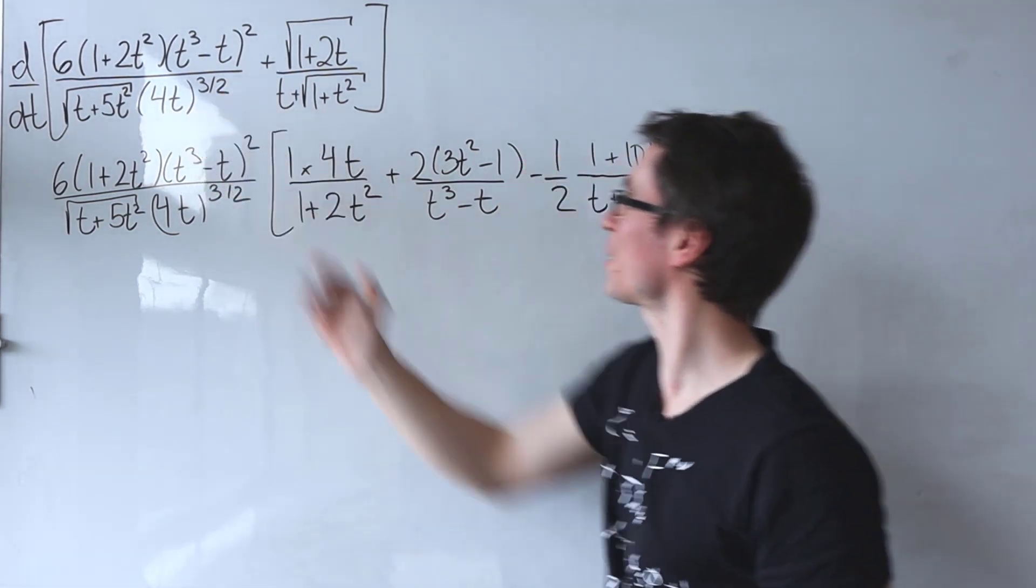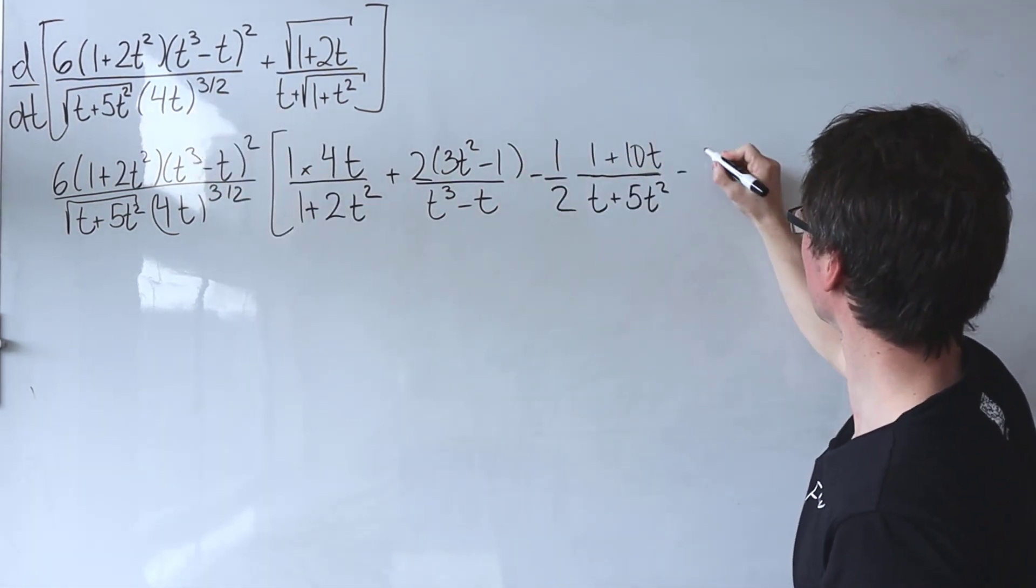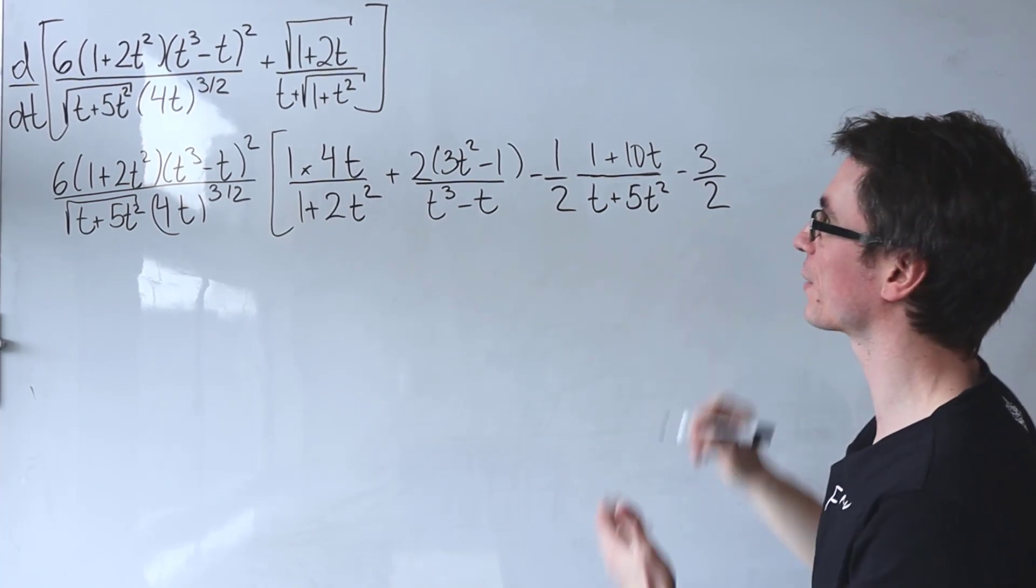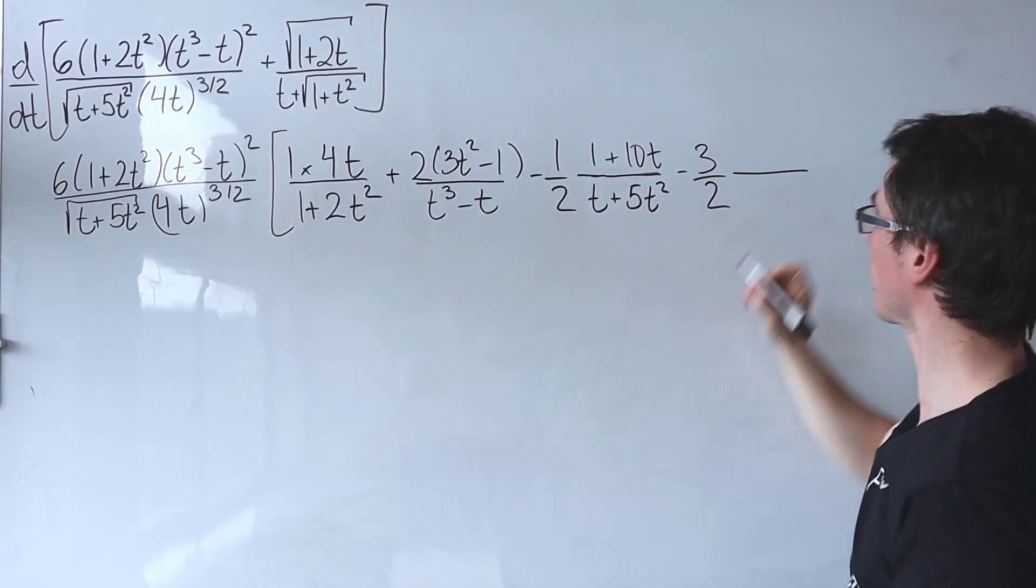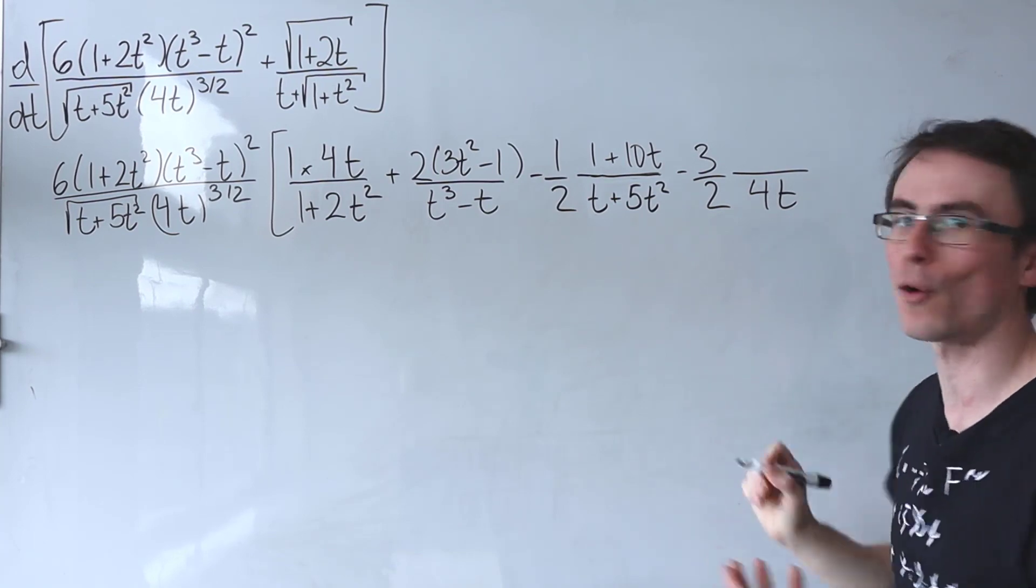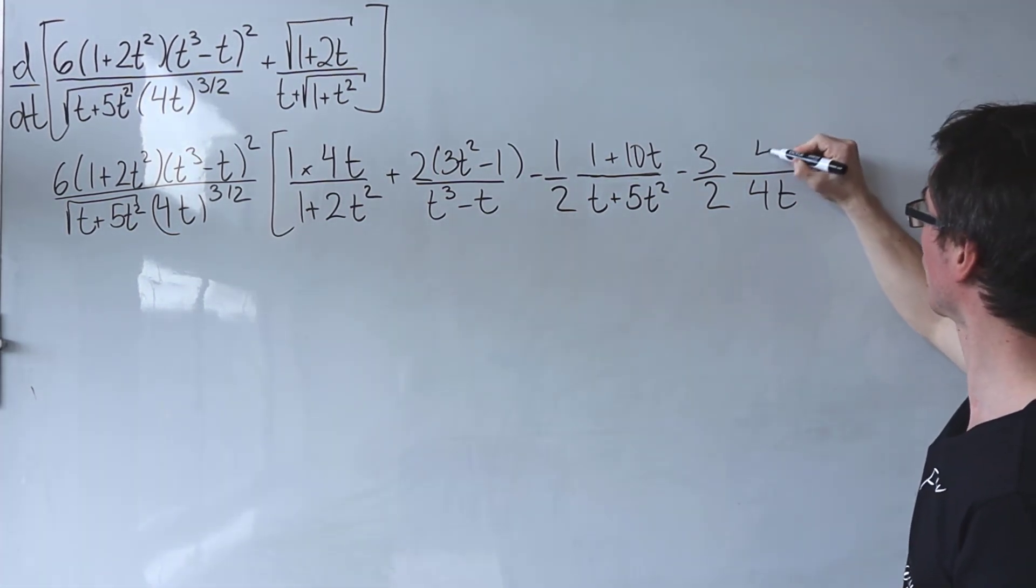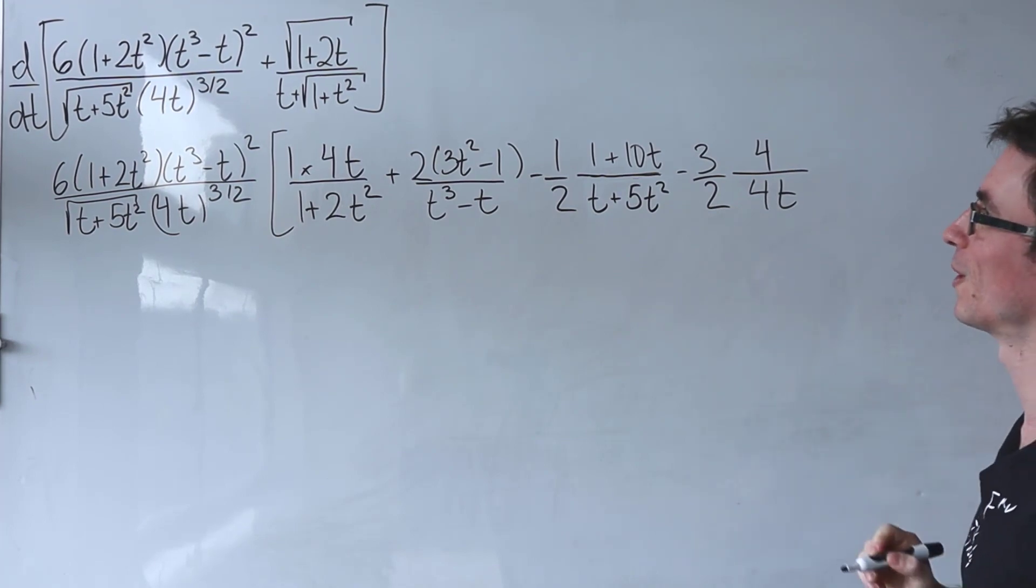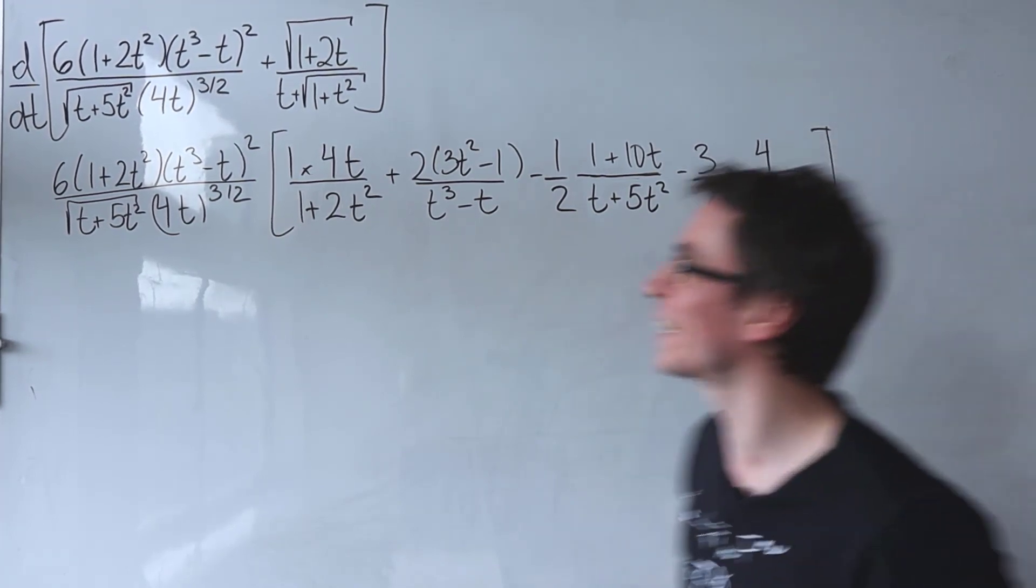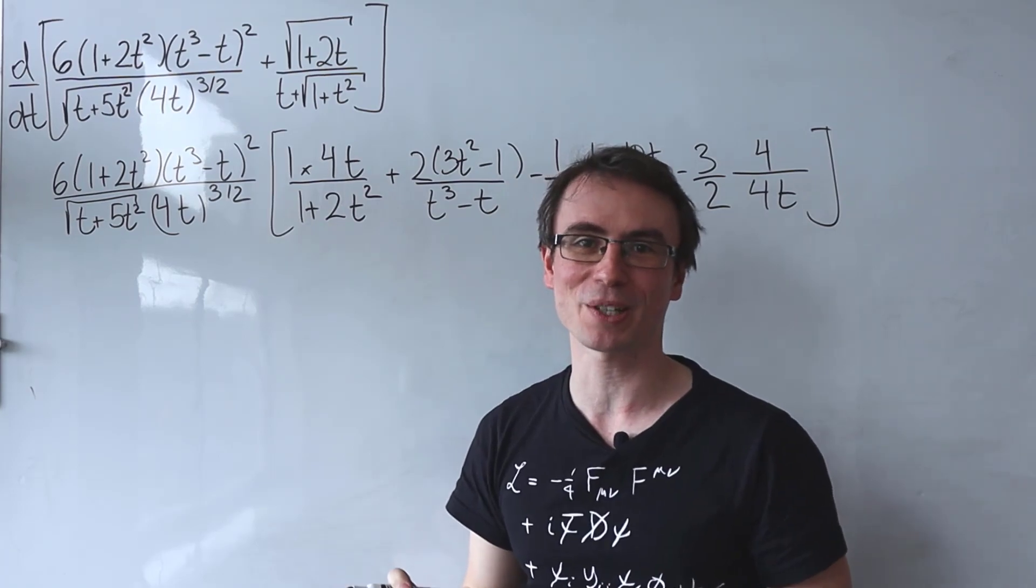And one more, which is 4t raised to this power. So it's going to be take away 3 halves. That's the power we divide by the original expression, which is 4t. And then we differentiate that and place that on the top, which is just equal to 4. And now we can close the bracket and we've differentiated the first part of our expression.